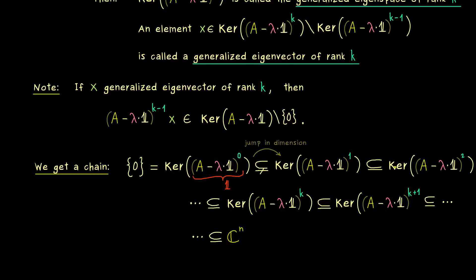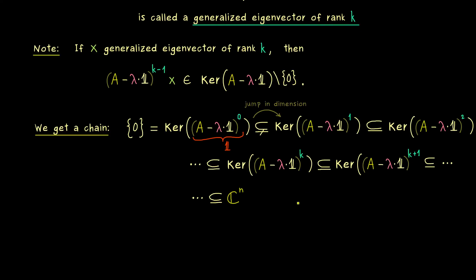Therefore at some point this whole infinite chain has to be stable. Or to say it in other words it's actually just a finite chain because at some power we can just end it. And there I can already tell you this number is called the fitting index.